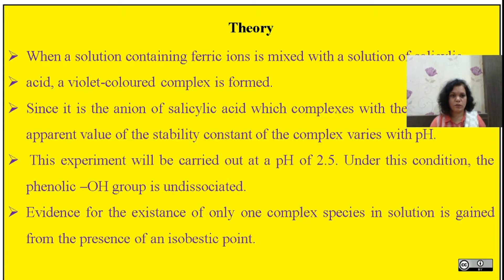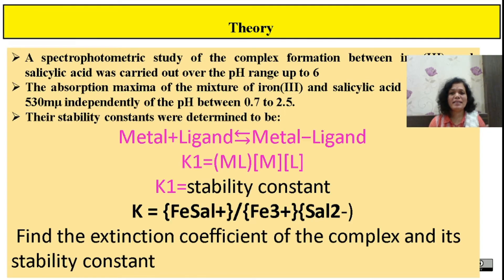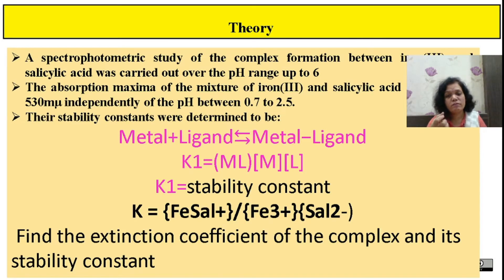Under this condition, the phenolic OH group is undissociated. The evidence of existence of only one complex species in solution comes from the isobestic point. We carry out the spectrophotometric study of this complex formation between Fe3+ and salicylic acid at around pH up to 6. The reported absorption maxima for this complex is 530 nm, which is independent of pH. The stability constant is found from the ratio of concentration of complex to concentration of initial reactants Fe and salicylic acid.